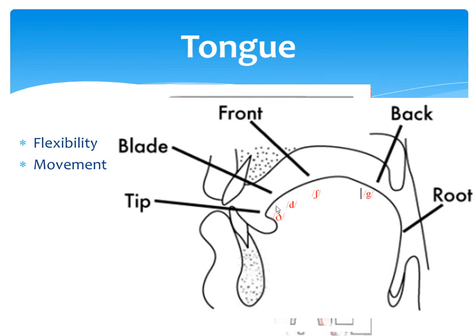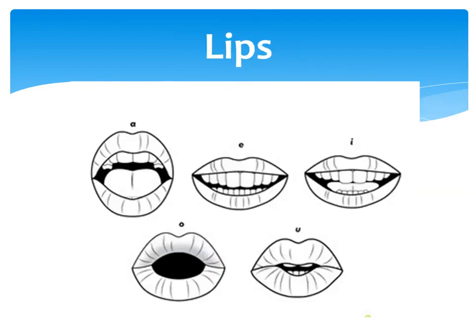Because of the flexibility of the tongue and the different positions it takes against the palate, it is the most important organ of speech. Finally, we have the lips — the shape of the lips determines the sound.